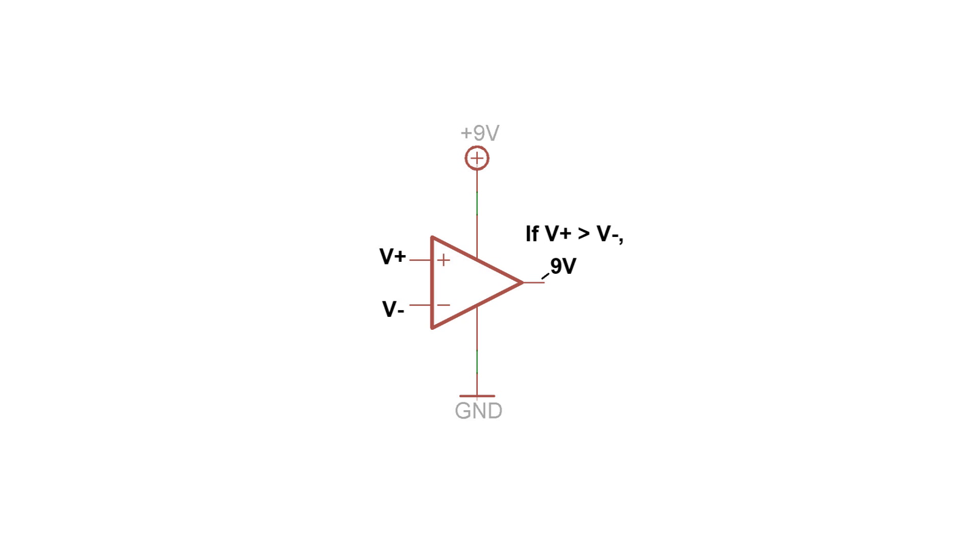Actually, because op-amps aren't perfect, it'll be slightly less than that, but 9 volts is close enough. If V-plus is less than V-minus, the output of the op-amp will go down to the negative rail of the op-amp's power supply. In this case, that's just 0 volts at ground. And that's basically how a comparator circuit works.